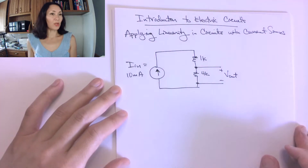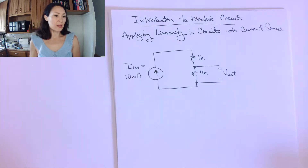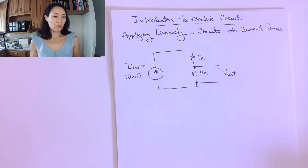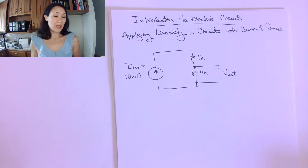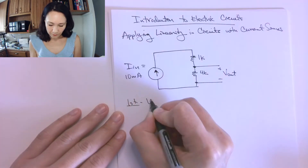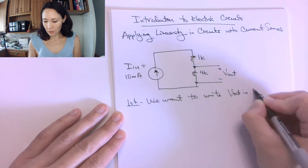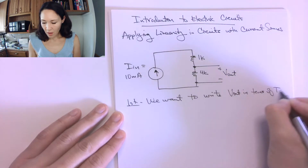Here's an example circuit where I want to show you how to use linearity to make a shortcut for solving it. Just like before, we want to make an equation for Vout in terms of Iin. Last time with voltage sources, we wanted Vout in terms of Vin, and whatever was multiplied by Vin was our scale factor k. Now we have Iin instead. So the goal is to write Vout in terms of Iin.